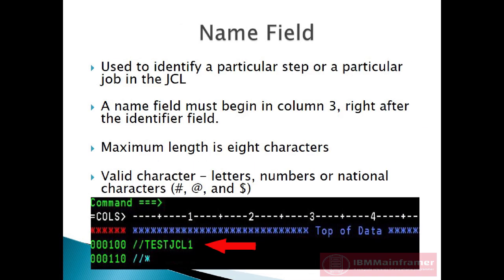Next field is the name field that follows immediately after the identification field. That is, if we have a need to reference or to potentially identify a particular step or a particular job in the JCL, then we need to have the name field filled in, and this immediately follows the identification field. The name field must begin in column 3, right after the identifier field. It consists of 1 to 8 characters.